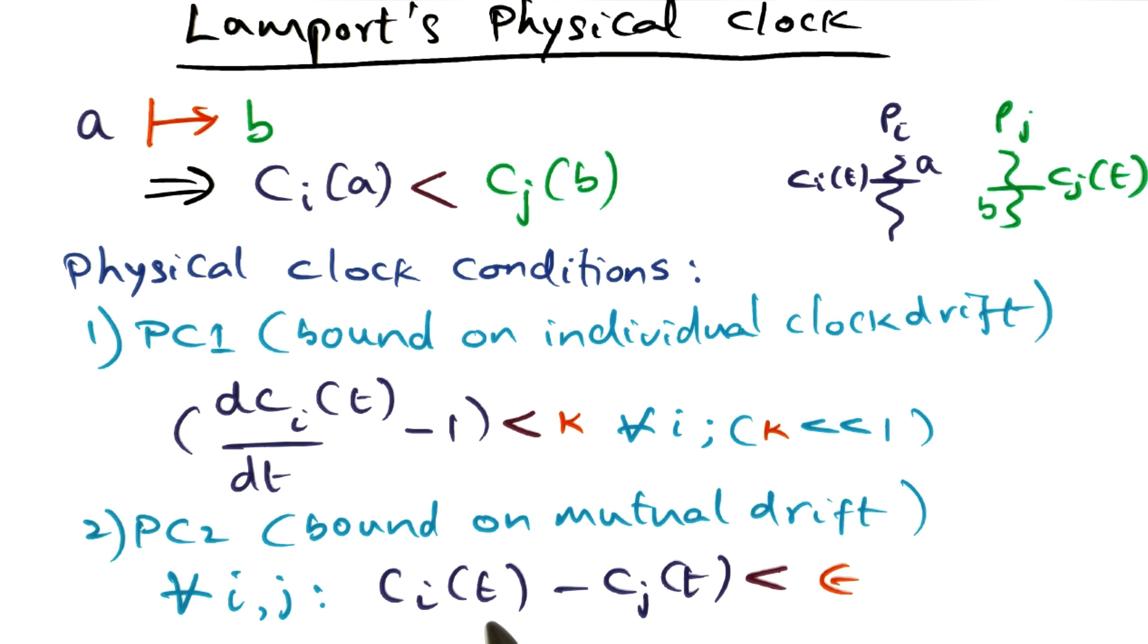As I said earlier, at real time t, my clock should also be reading t. This guy also should be reading t. If it doesn't, that's when you have a drift.